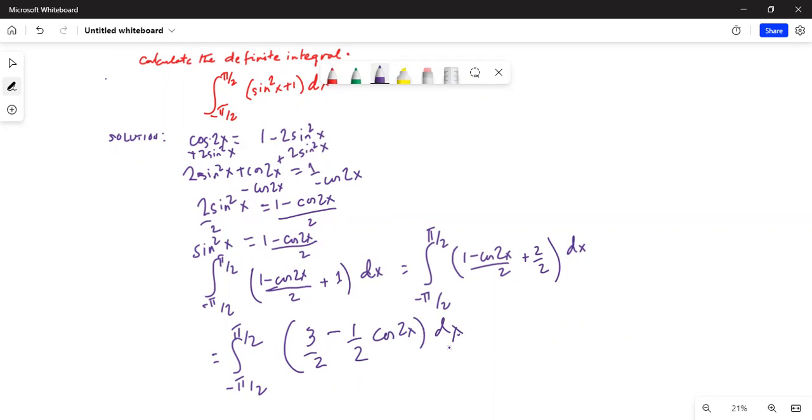So, now we do the integration and this will be 3 by 2, inside the parenthesis, 3 by 2 integrated with respect to x is x. And integration of cosine 2x is sine 2x. So, half times half becomes one fourth. Half is coming because cosine 2x when you integrate with respect to x, half times half becomes 1 fourth minus 1 fourth sine 2x.